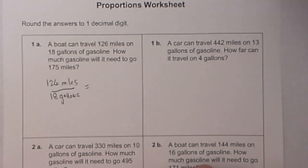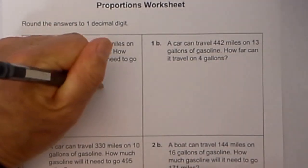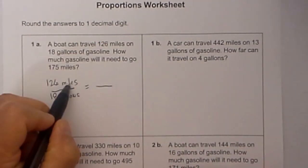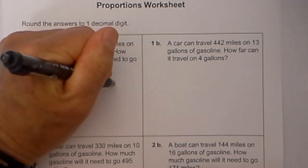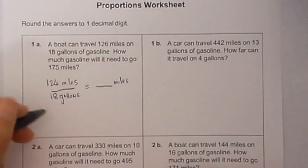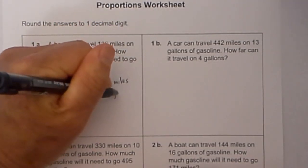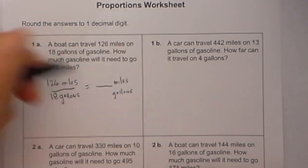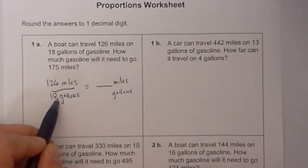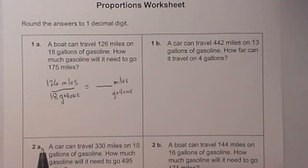But if you set the proportion up properly it will not make a difference. But what is very important is if you have miles on the top, you must set what is equal to the same. So if you notice, I have miles and miles, gallons and gallons. That is the most important thing.